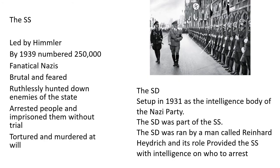The most important aspect of the police state was the SS. They were led by Himmler. By 1939 they numbered 250,000. They were fanatical Nazis — brutal and feared. Their job was to ruthlessly hunt down enemies of the state. They arrested people and imprisoned them without trial. They tortured and murdered at will. The SD, set up in 1931, was the intelligence body of the Nazi party and was actually part of the SS. The SD was run by Reinhard Heydrich, and its role was to provide the SS with intelligence on who to torture, murder and arrest.